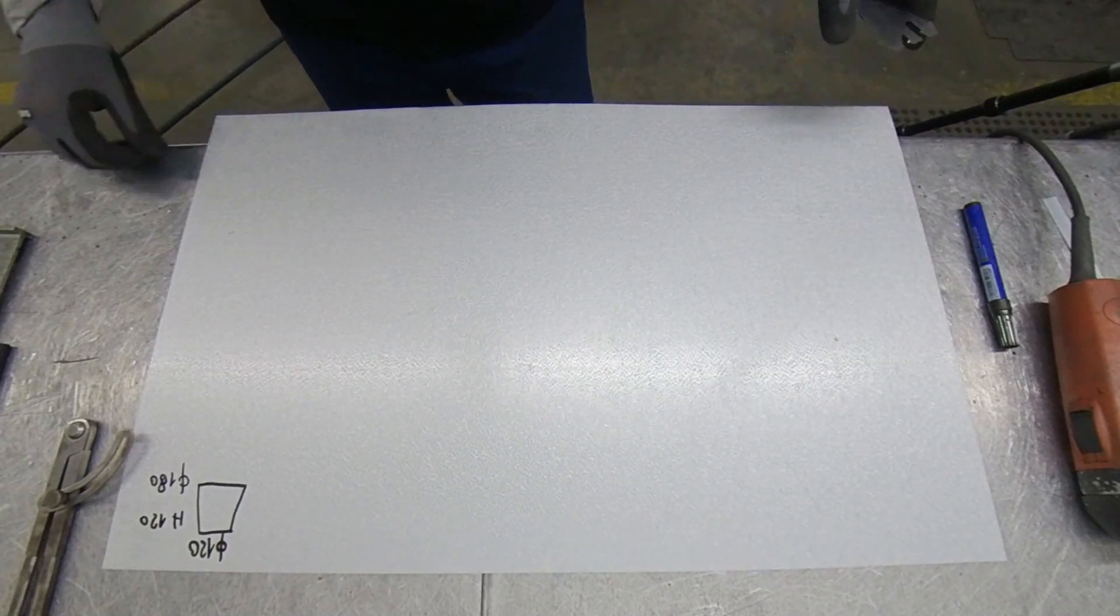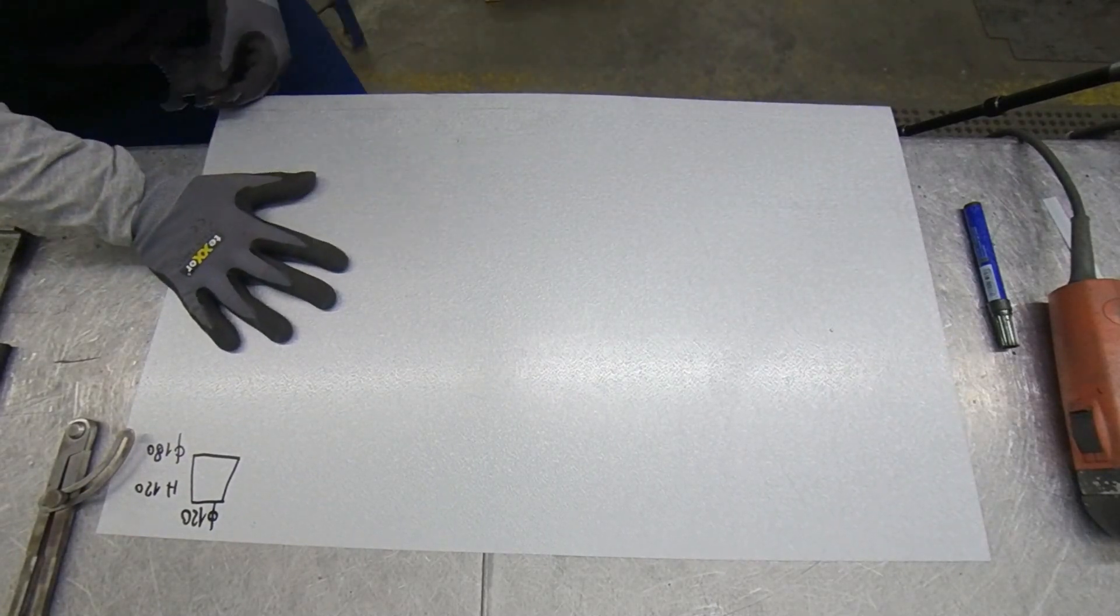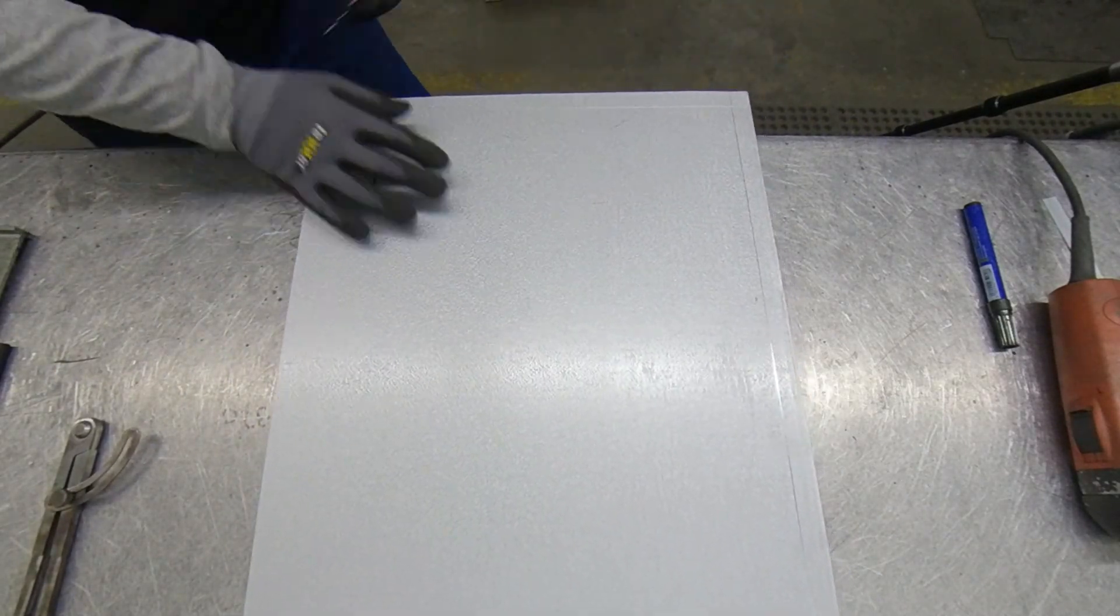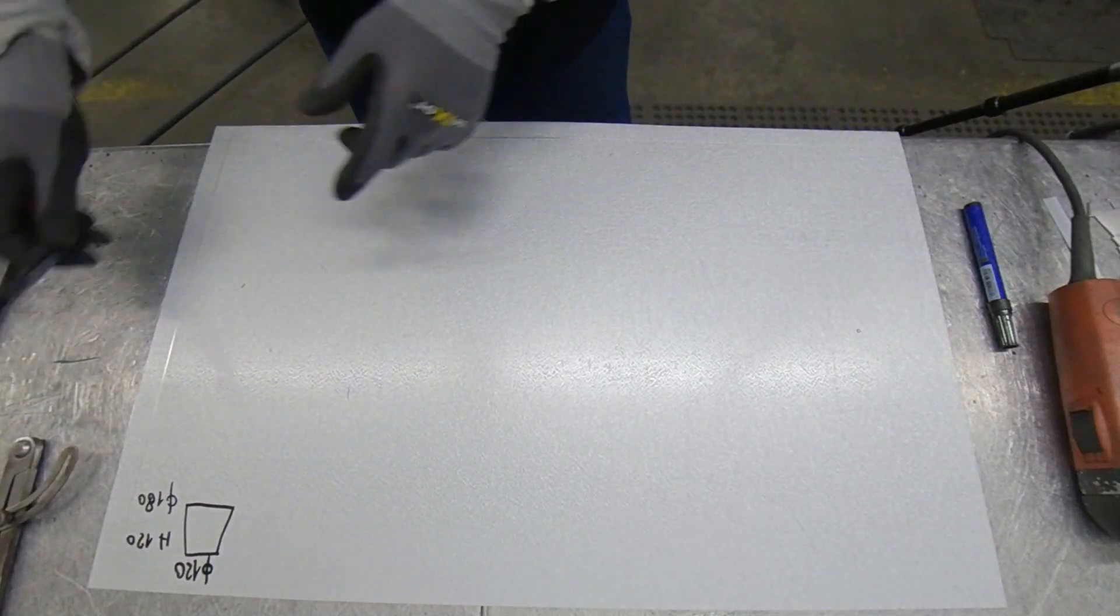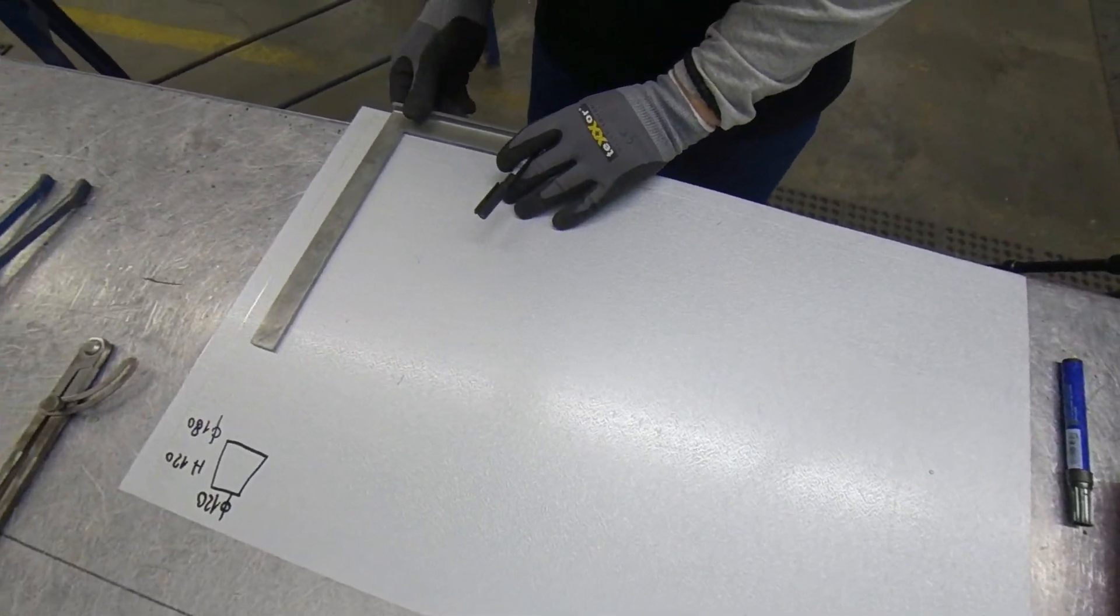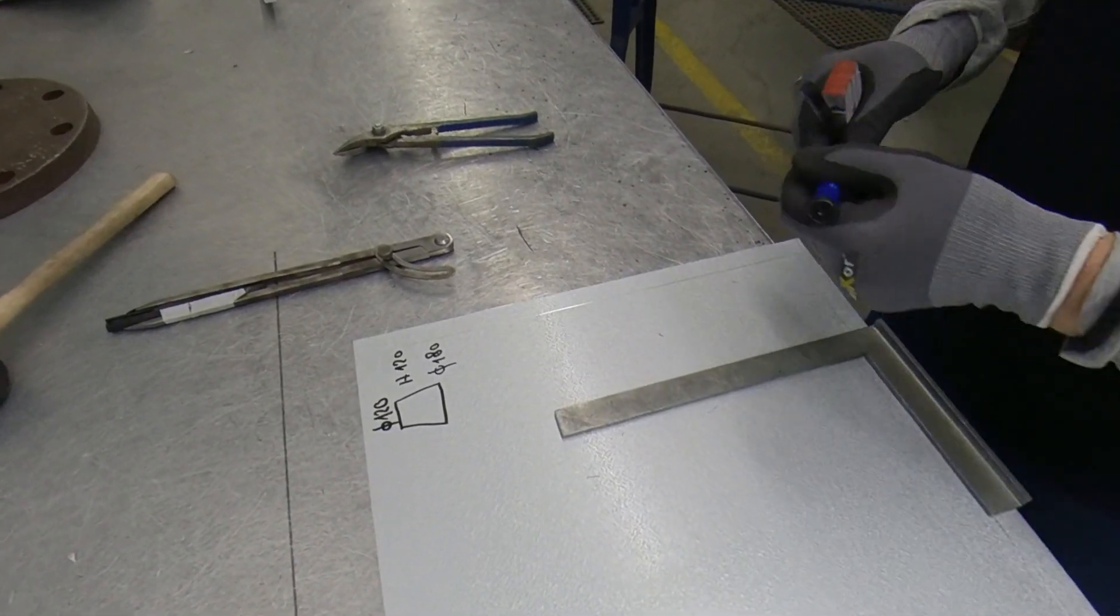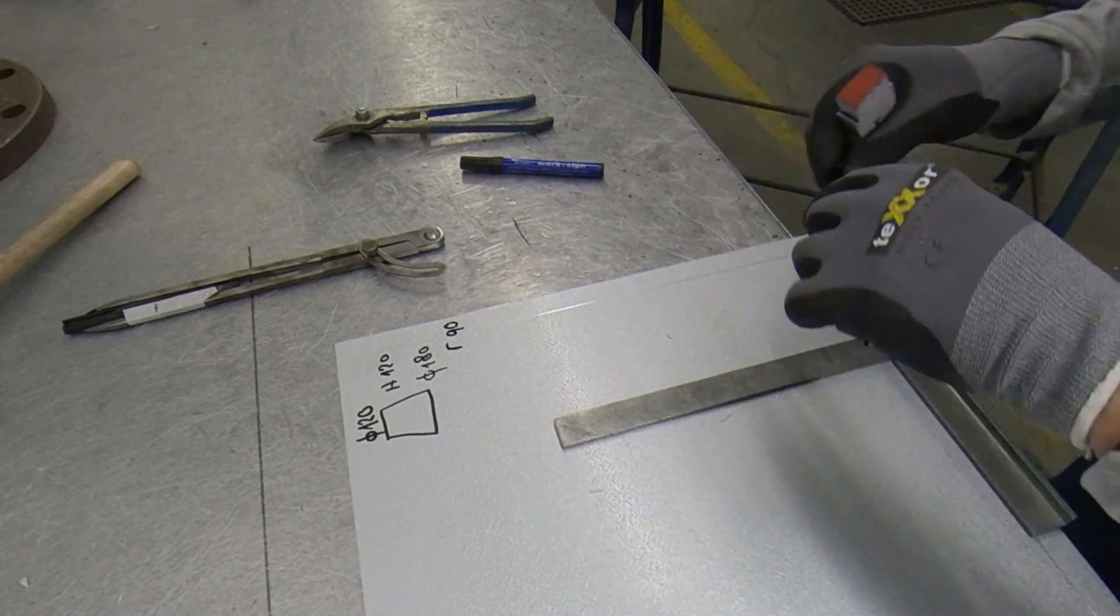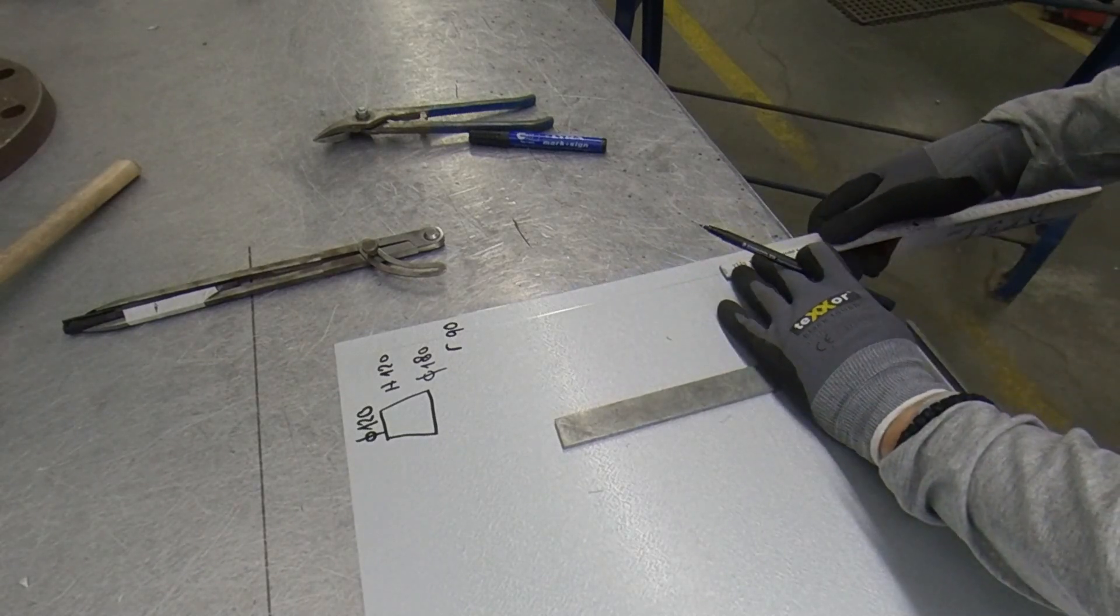As usual, we make here a working line. Diameter 180 has a radius of 90, so we're going to go from this working line 90.